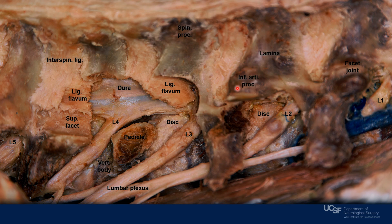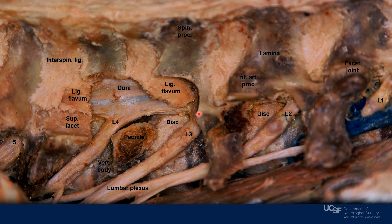Lateral to the lamina, we see the inferior and superior articular processes. The superior articular process creates a facet joint with the adjacent inferior articular process. Lateral to the articular processes, we see the long transverse process.